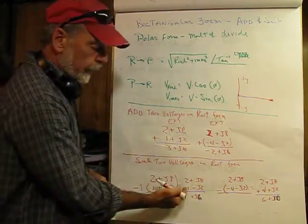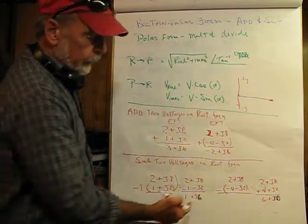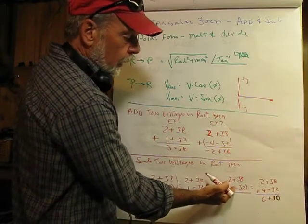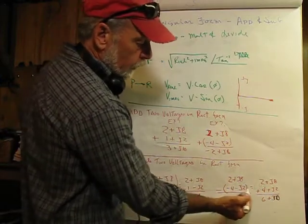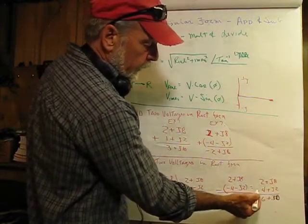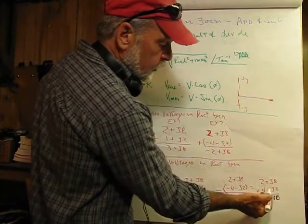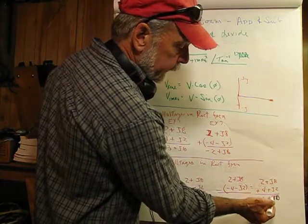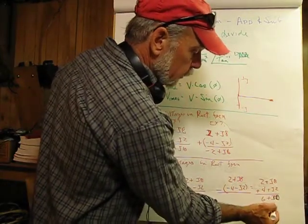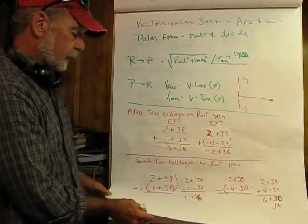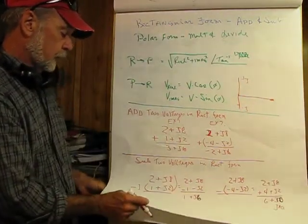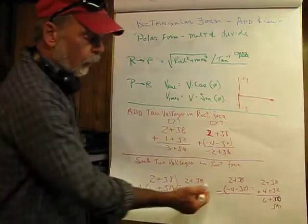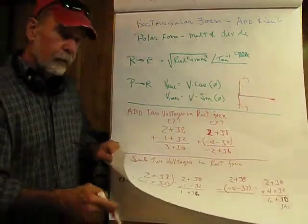The rules of subtraction are: reverse the sign of the subtrahend and add. We have to be careful to do that to both the real and imaginary terms. Another example: 2 plus j8 subtracting negative 4 real minus j2. We change the sign of the subtrahend — negative 4 becomes plus 4, and negative j2 becomes plus j2. Adding the real terms gives 6; adding the imaginary terms gives plus j10. Adding and subtracting in rectangular form requires care with parenthesizing and altering the sign of both components in the subtrahend.